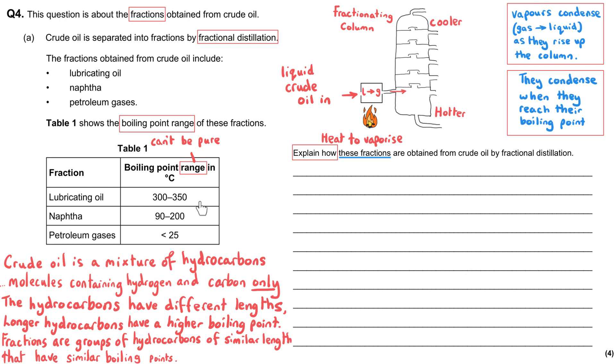And they'll condense at the level of their boiling point. The lubricating oil has got the highest boiling point. That means it needs to be hotter to keep lubricating oil as a vapor than it does for the other two. And so the lubricating oil will condense first.